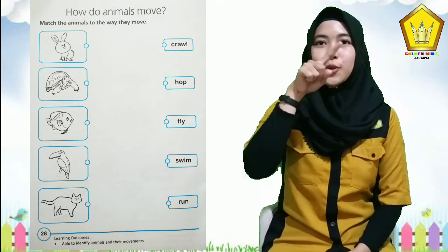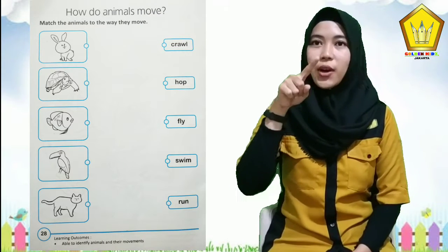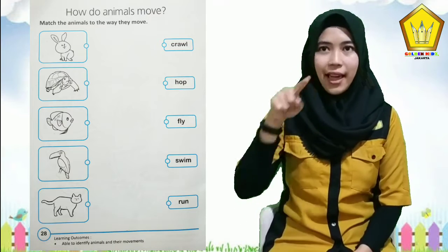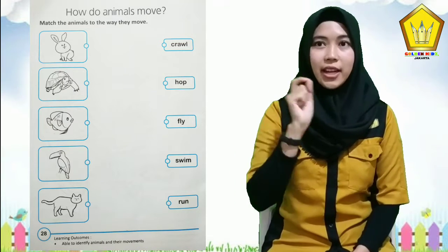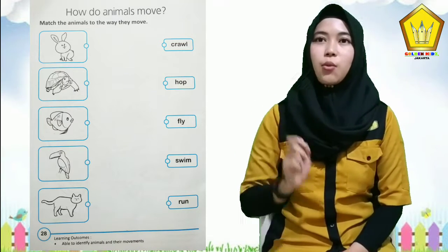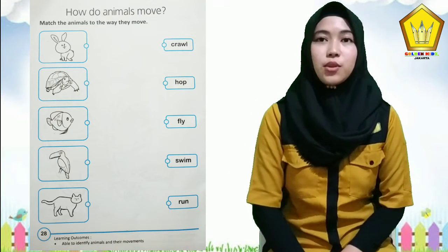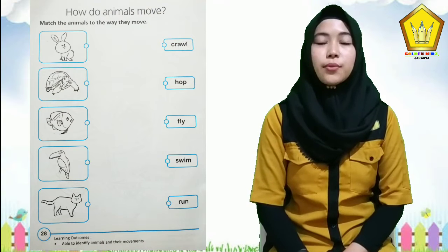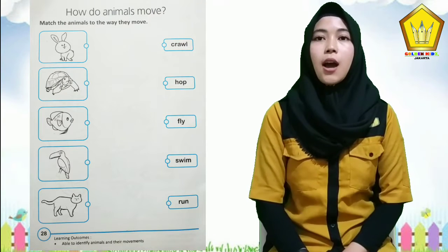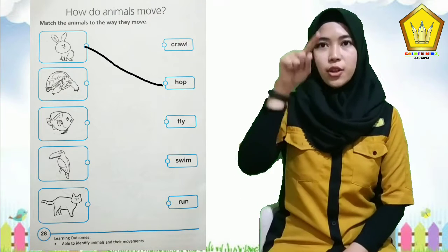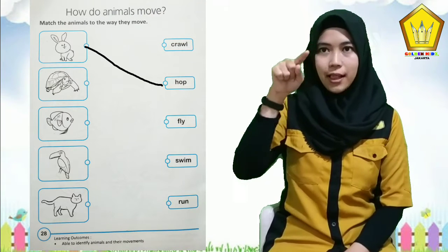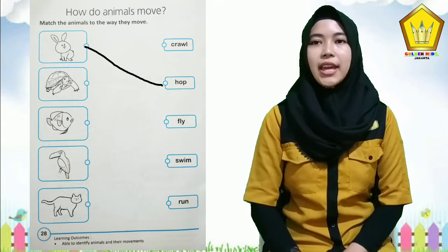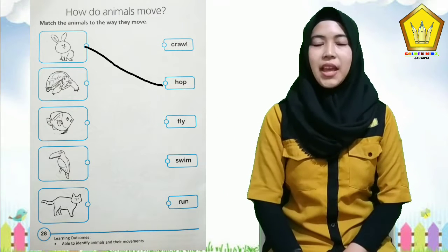Now you match the animals — make a line — animals to the way they move. Remember, rabbit moves with hop, so you make a line to hop, h-o-p, hop.